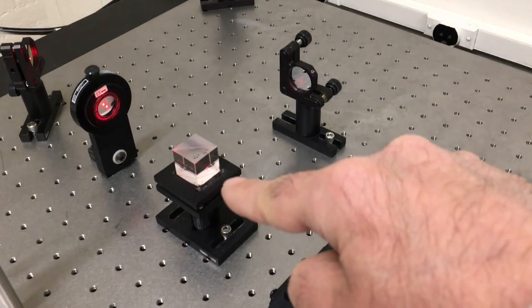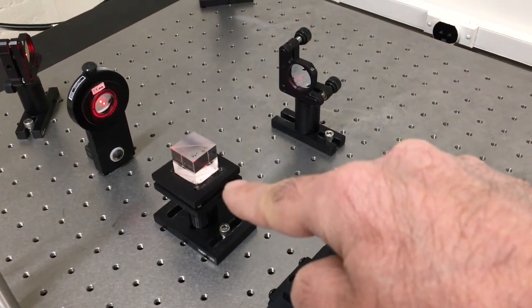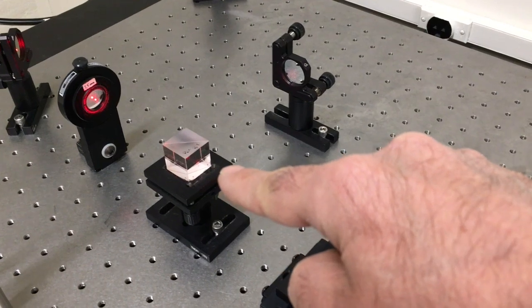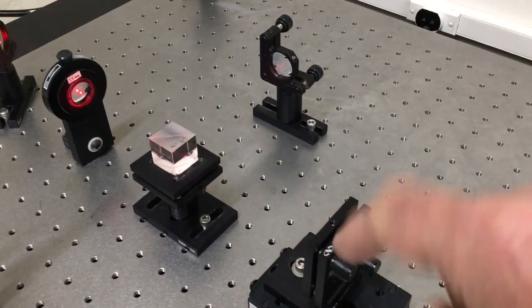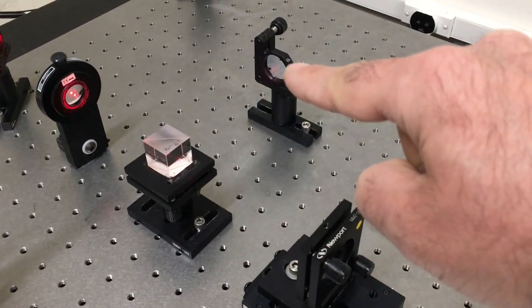The beam splitter cube is the part that actually takes the beam and splits it up into two separate beams. One going straight through, one going off at a right angle.